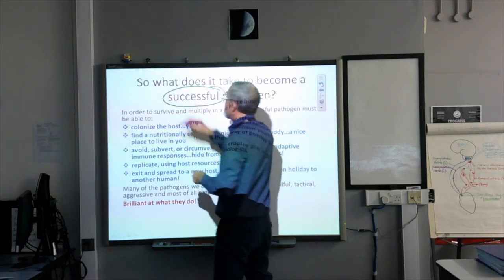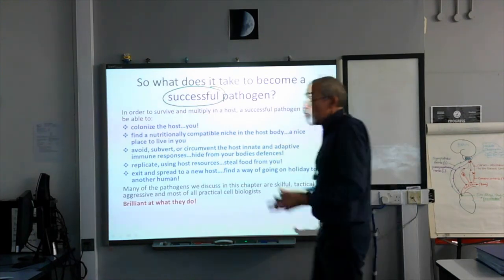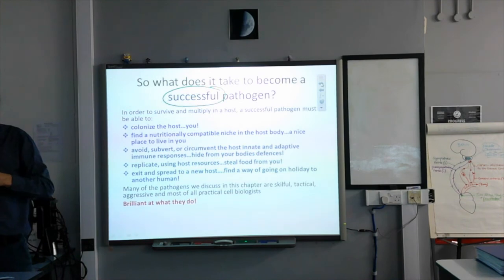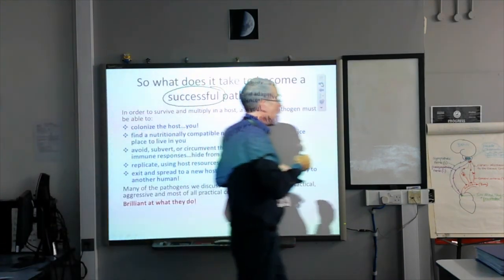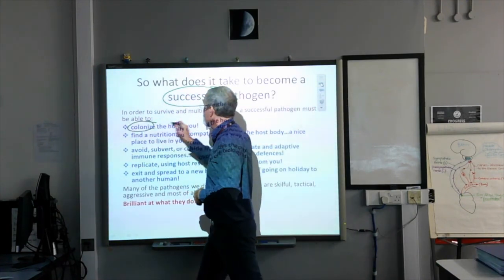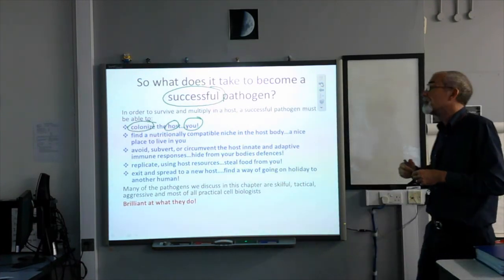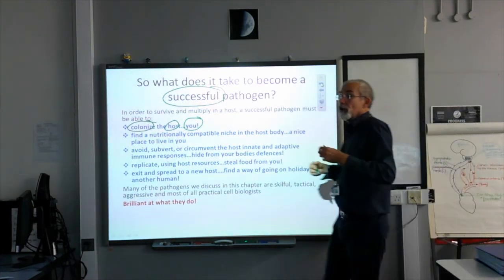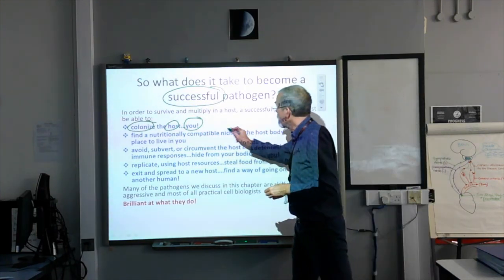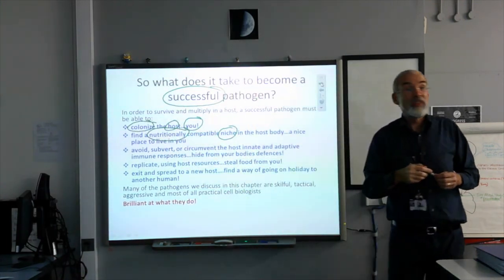This is the blueprint for all pathogens. If you're going to be successful as a pathogen, you need to do certain things. First, numero uno, you need to colonise the host — meaning you. In other words, they need to get in and they need to divide. They need to find what we call a compatible niche where they will get nutrients — somewhere where they can find food.